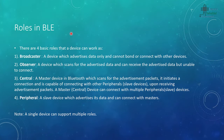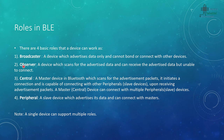There are four roles in BLE: broadcaster, observer, central, and peripheral. The broadcaster is a device that advertises data only and cannot bond or connect with other devices. The observer is a device that scans for advertised data and can receive it, but is unable to connect. Using NRF52832 and NRF52840, we can put them in these roles as well, but mostly we use central and peripheral.